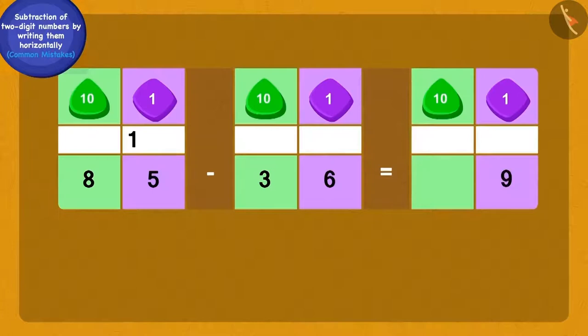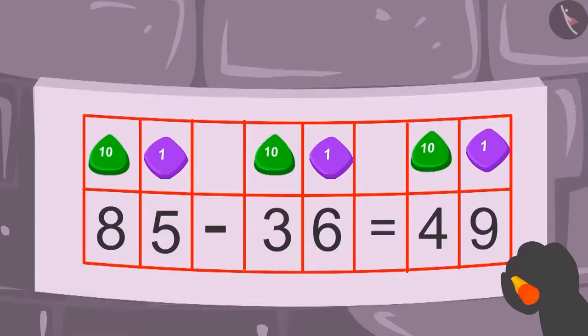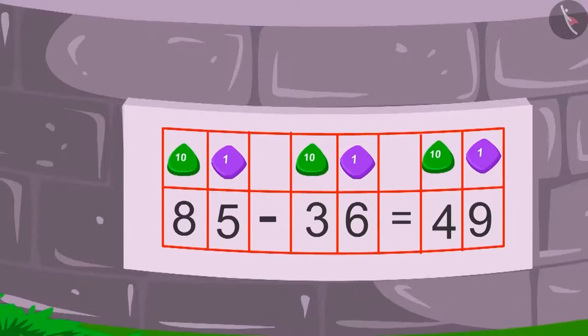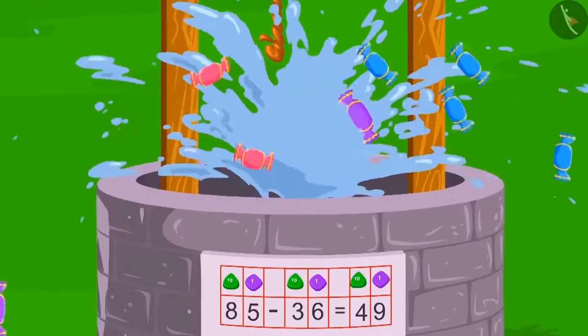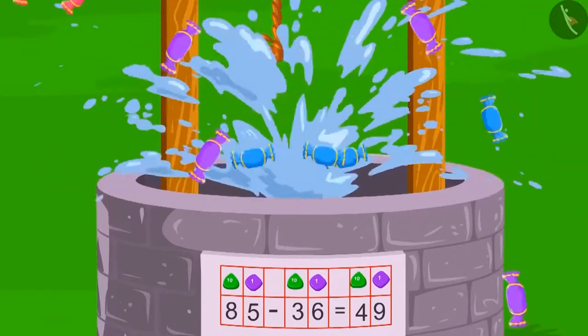Yes! The correct answer of this subtraction will be 49. Golu erased the wrong answer and wrote this correct answer on the well. As soon as Golu wrote the correct answer, a whole lot of toffees flowed out of the well.